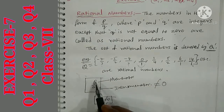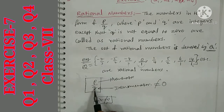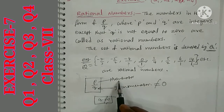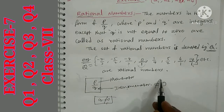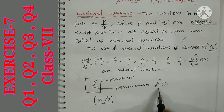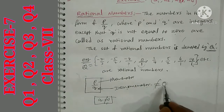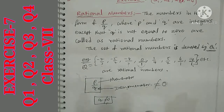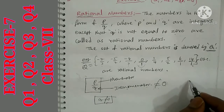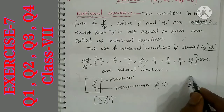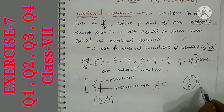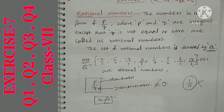So P by Q is a rational number: P is the numerator, Q is the denominator, and the denominator should not be equal to 0 — that is the definition. If Q is equal to 0, that is not a rational number. Example: 1 by 0 is not a rational number.